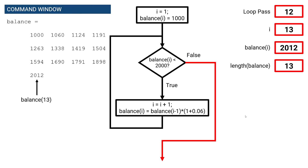While there are 13 elements inside of the array, it actually only took 12 loop passes, meaning it took 12 years — not 13 — to exceed $2,000. The reason for that is our initial balance prior to accumulating any interest is stored inside of the first element in the array, so the first element is already occupied before our loop begins.